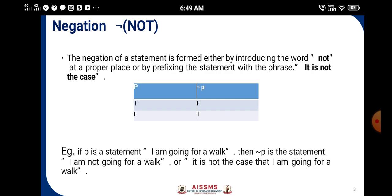Negation: The negation of a statement is formed either by introducing the word 'not' at a proper place or by prefixing the statement with the phrase 'it is not the case.' In the truth table, when we have the value as T for p, the negation of p is F. When we have the value as F, the negation of it is T. Consider the example: if p is a statement 'I am going for a walk,' then negation of p is 'I am not going for a walk,' or 'It is not the case that I am going for a walk.'